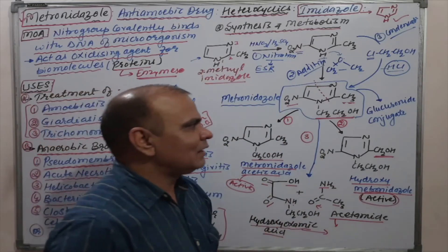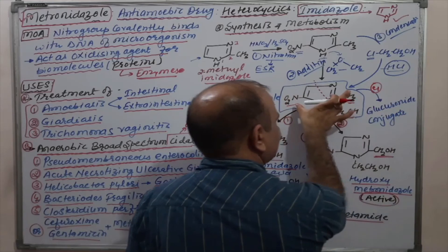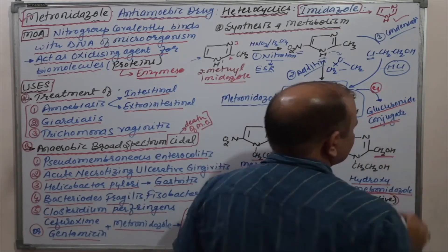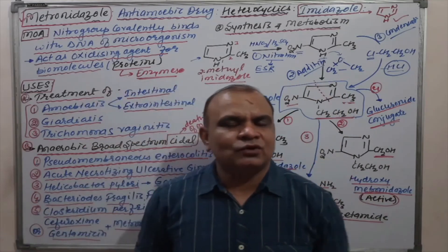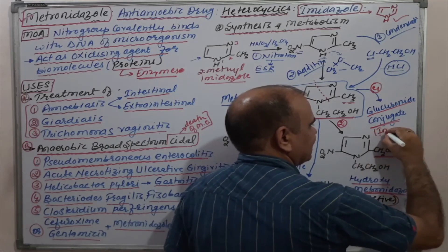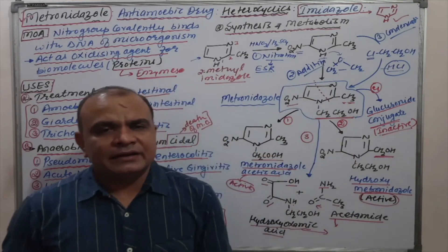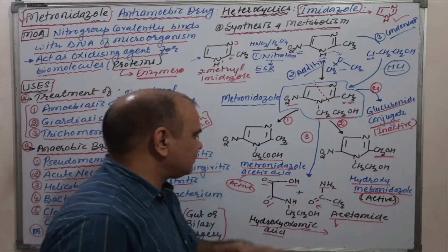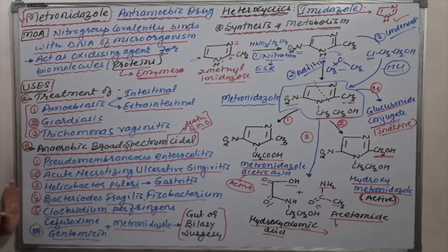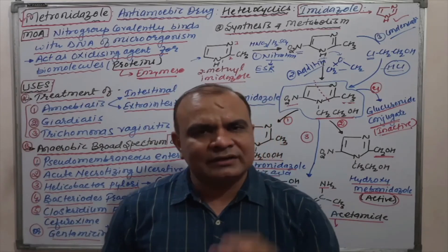These degradation products undergo glucuronide conjugation and are filtered through the kidney, removed via the renal route. In a fourth metabolic pathway, the drug molecule directly undergoes glucuronide conjugation, forming a water-soluble inactive form of metronidazole, which is also removed by the kidney. This covers the metabolism, synthesis, mechanism, and uses of metronidazole.